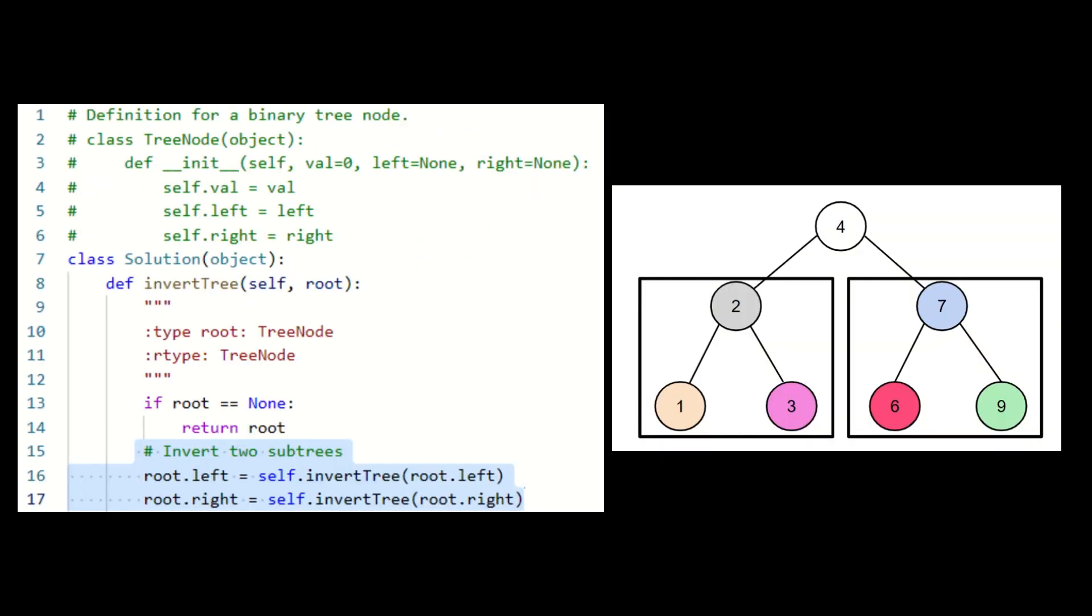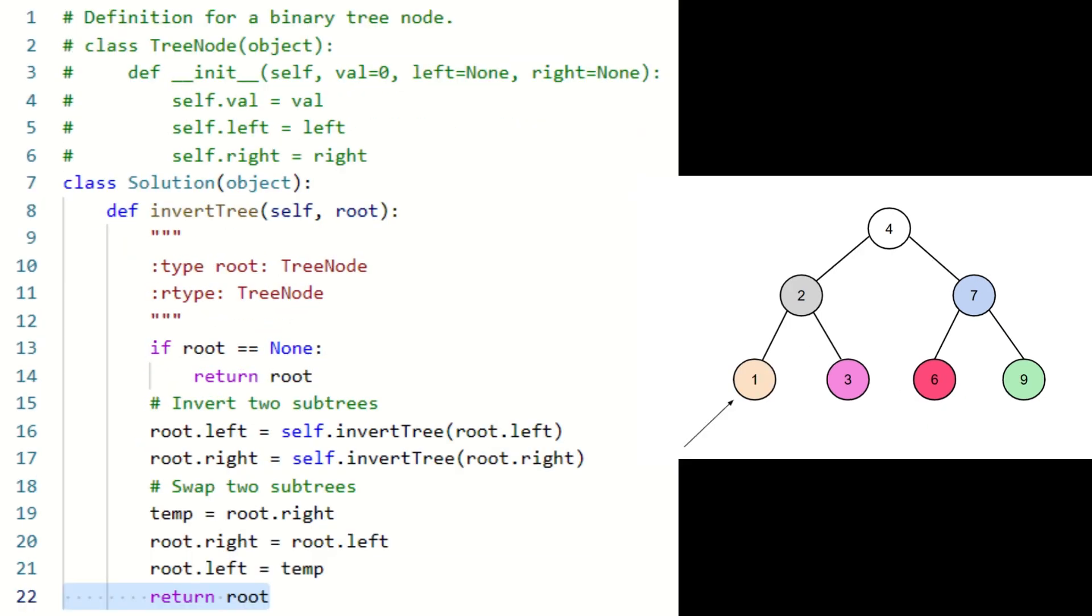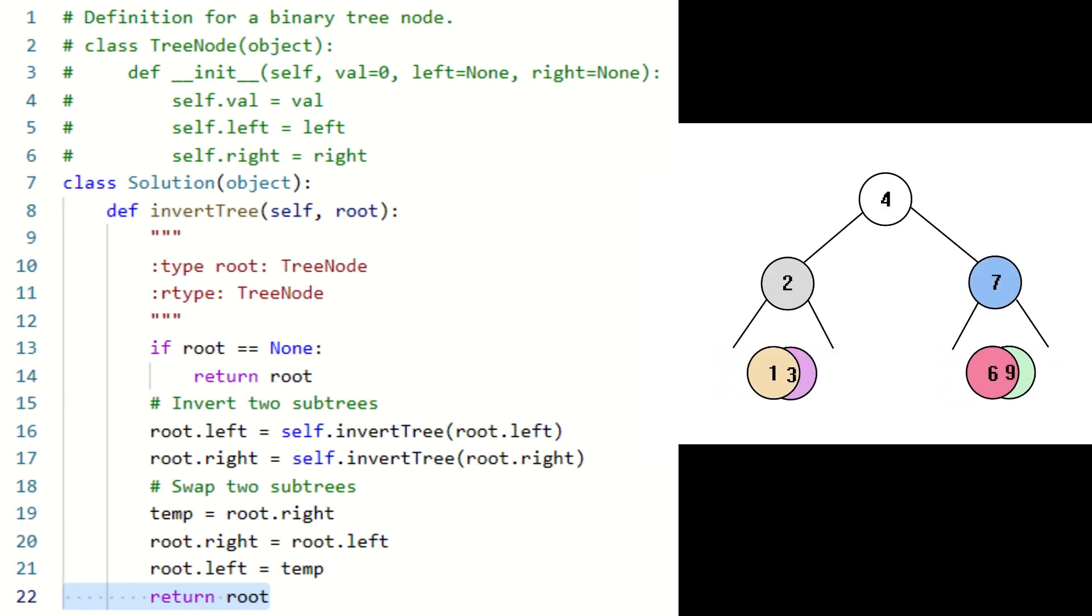Otherwise, we invert the left and right children with two recursive calls and then swap their positions. The recursion continues until we reach the leaf nodes of the tree, at which point the function returns the leaf nodes themselves and the leaves are swapped.